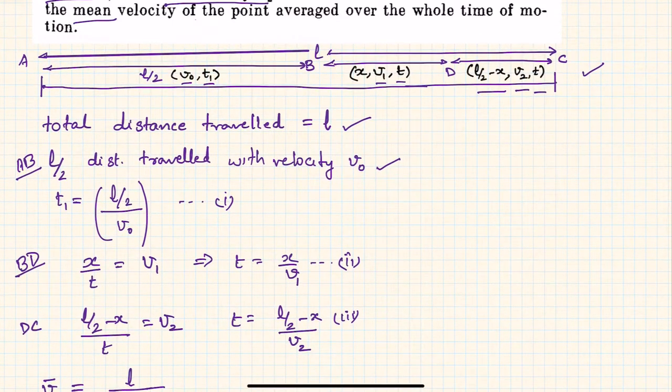Now let us see BD. This distance basically is BD, so x upon t will be v1. x upon t is v1 because distance by time, so hence t will be x upon v1.